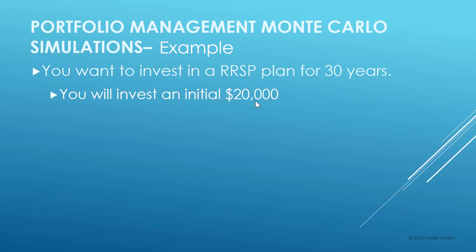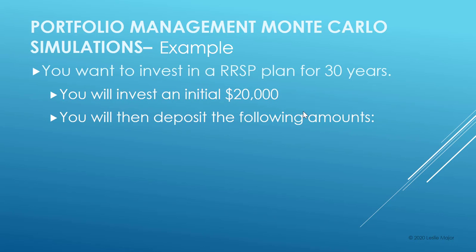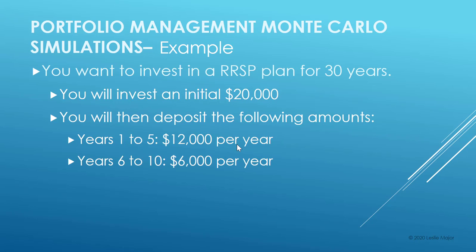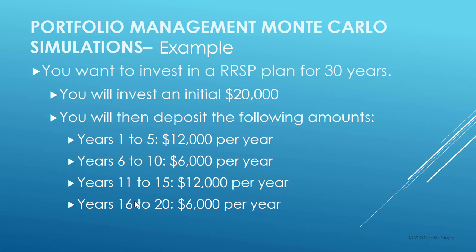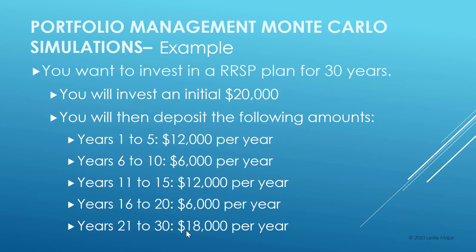You're going to invest an initial $20,000, and then deposit the following amounts yearly: $12,000 from years 1 to 5, $6,000 for years 6 to 10, $12,000 for the next five years, $6,000 for the next five years, and $18,000 for the final 10 years.